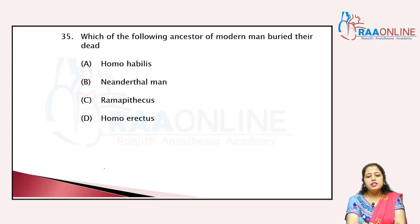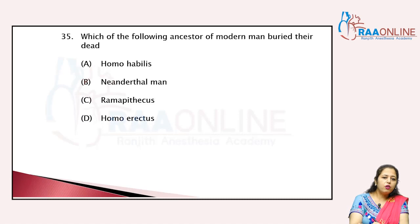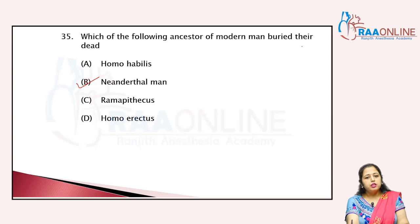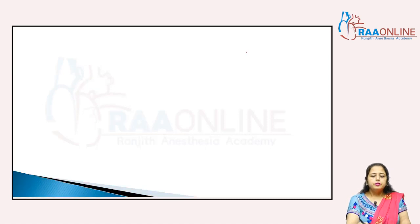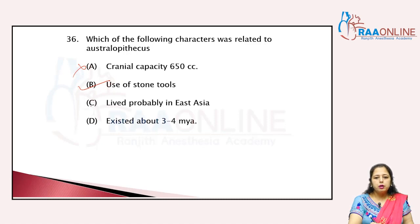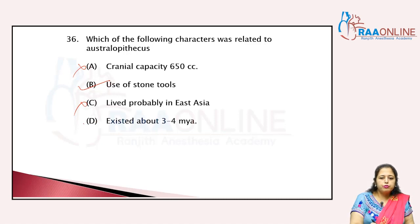Which ancestor of modern man buried their dead bodies? Neanderthal man — we already studied that burying of bodies started with Neanderthal man. Regarding Australopithecus: cranial capacity 650 cc — no; used stone tools — exactly; lived probably in Asia — no; existed about three to four million years ago — two to three million years, so also wrong. Answer is B.